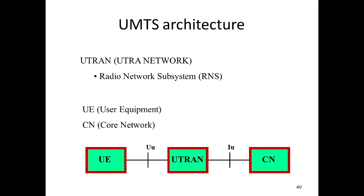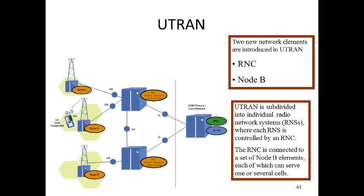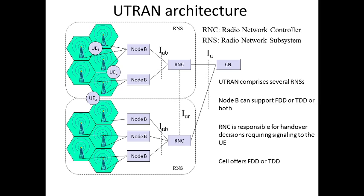What is the architecture of UMTS? This diagram represents the architecture of UMTS, in which we have user equipment and core networks. UTRAN introduces two network elements: RNC and Node B. UTRAN is subdivided into individual sub radio network systems, wherein each RNS is controlled by an RNC. This is the architectural diagram with reference to UTRAN.